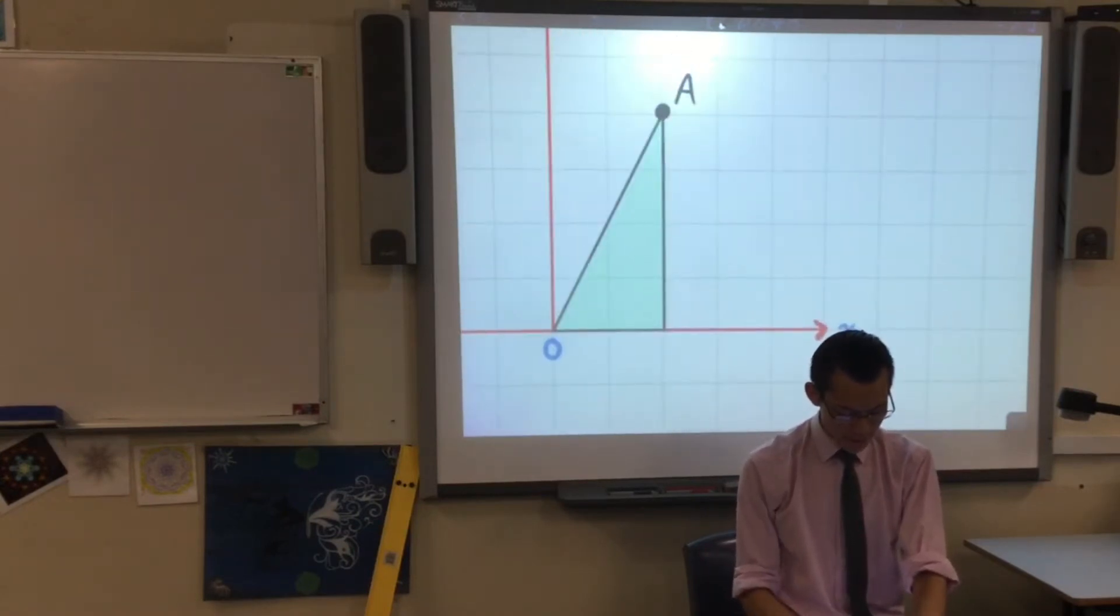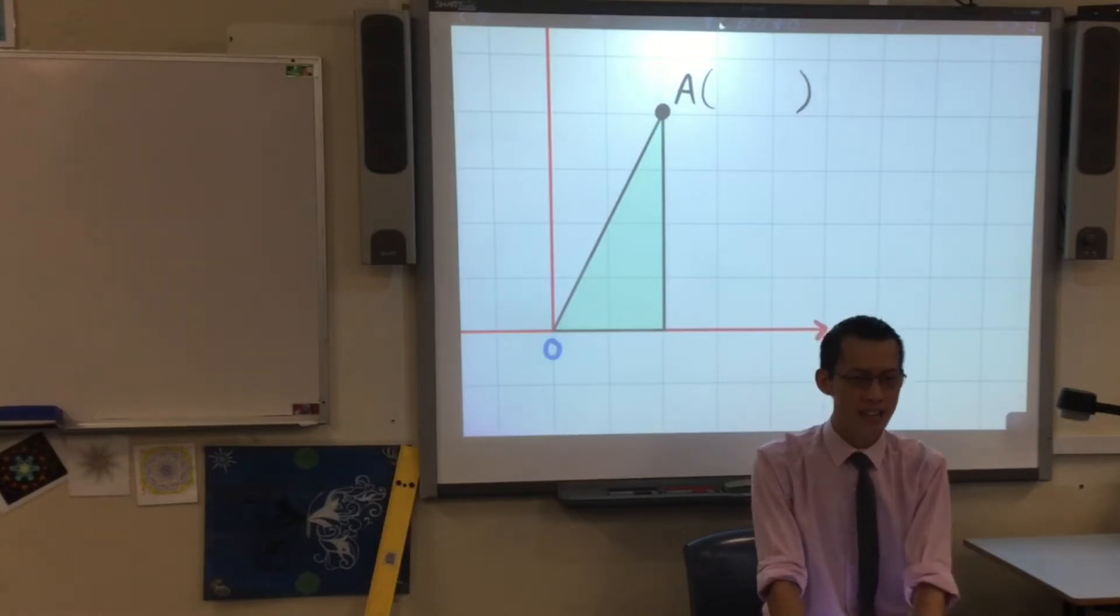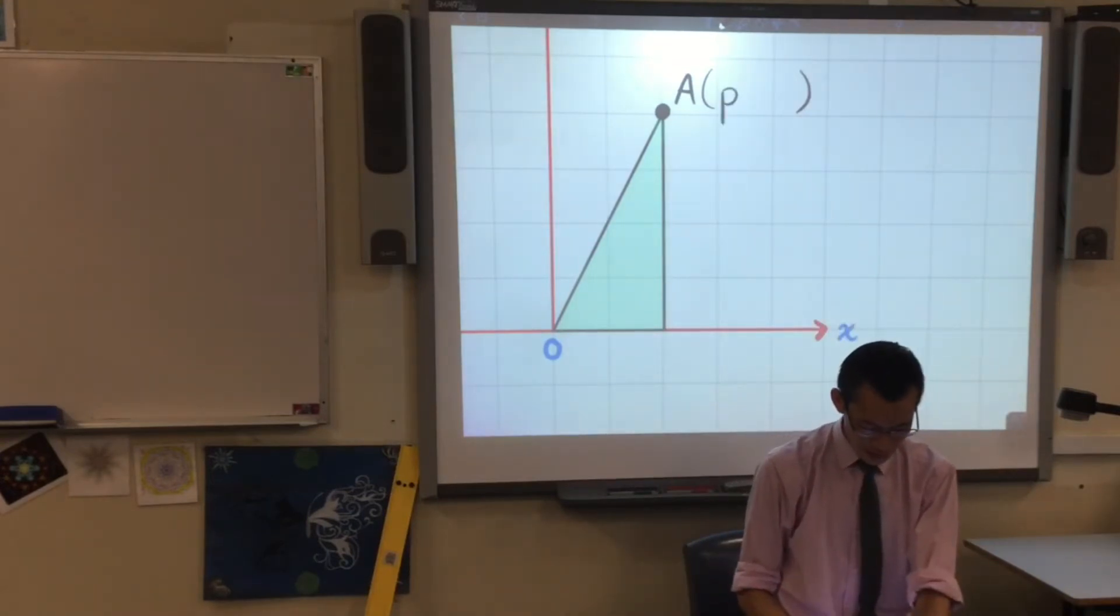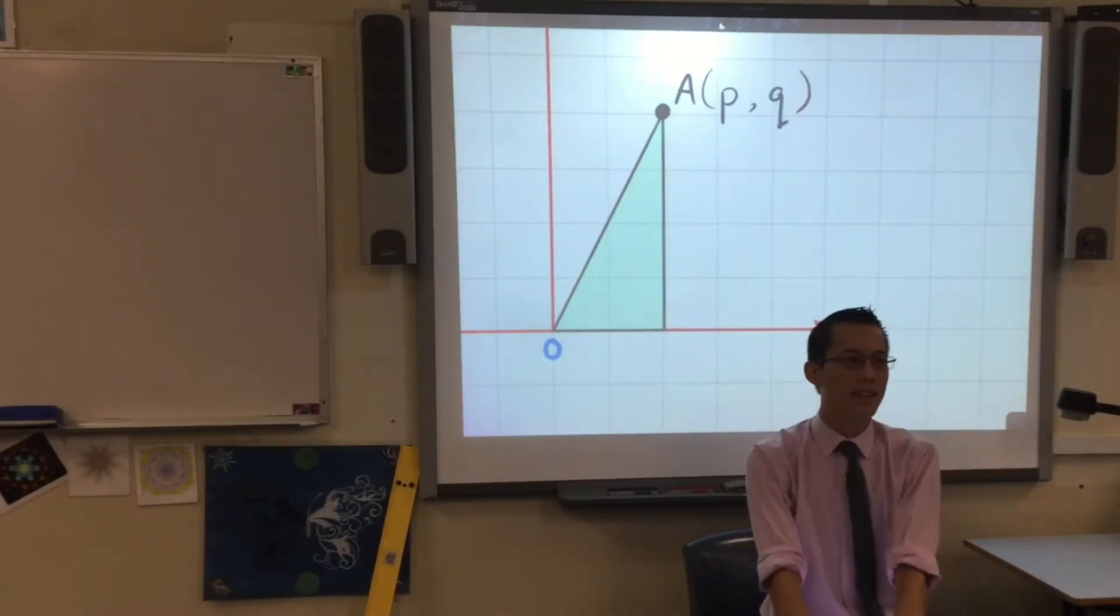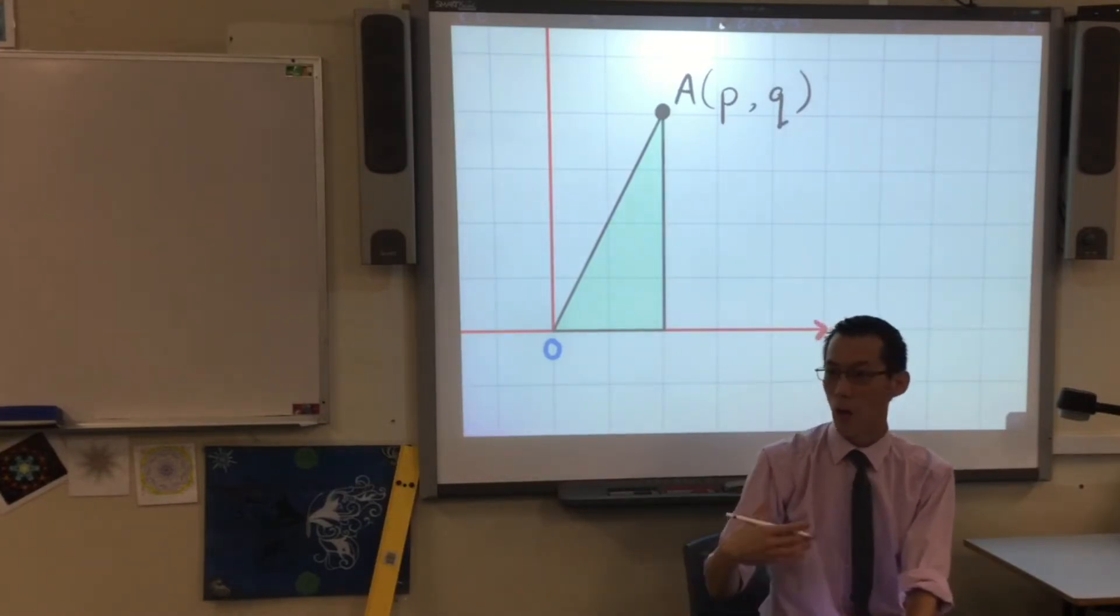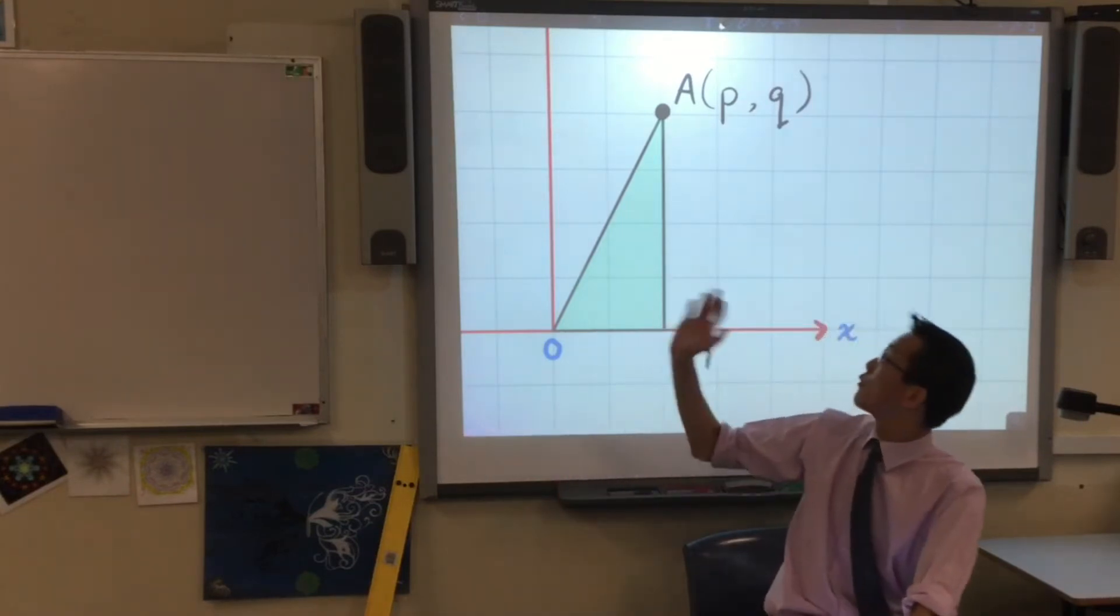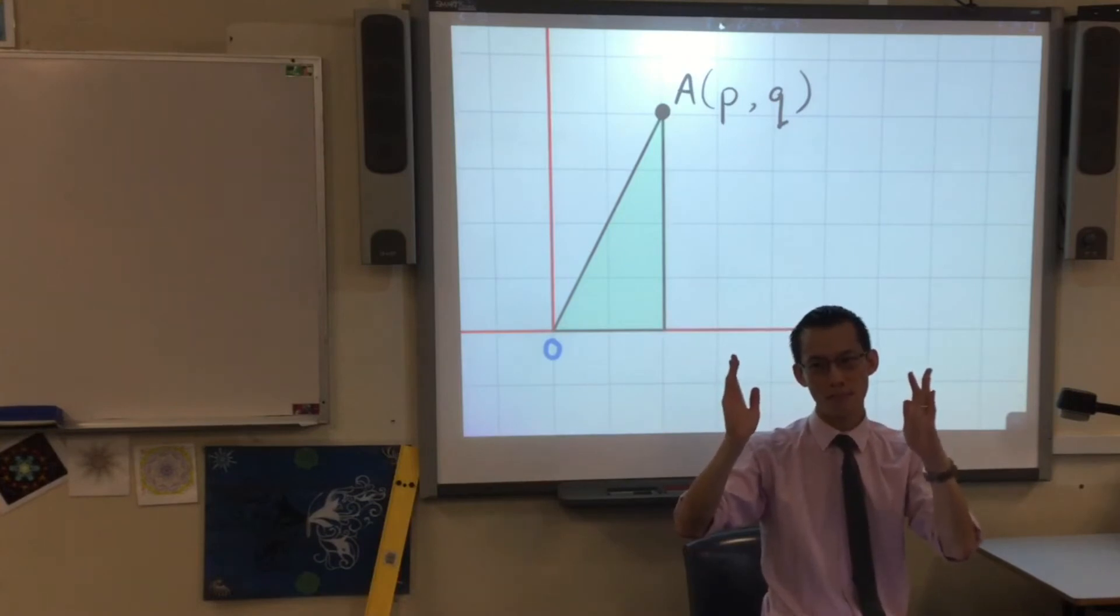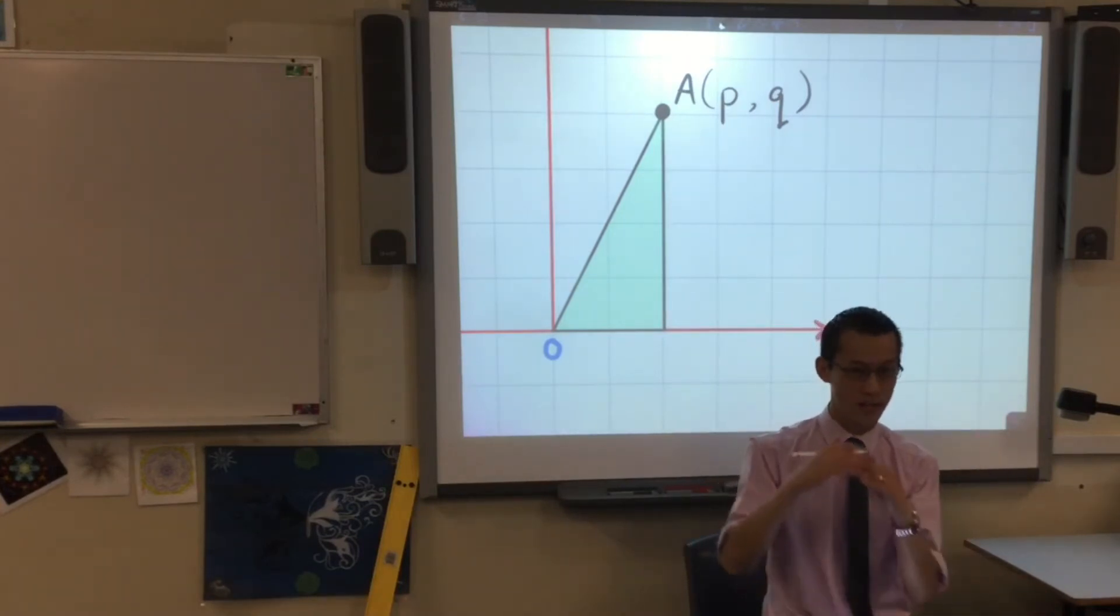Now, this point A, I'm trying to suggest that it's anywhere, it could be anywhere. So I can't say, even though it looks like it, that it's at 2,4, because that locks it in position at one particular spot. So instead of saying 2,4, I'm just going to say, well, let's use algebra, because algebra is the kind of mathematics that lets us deal with numbers when you don't know what they are. This will become really powerful for us in a minute. So I'm just going to call its x-coordinate P, and I'm going to call its y-coordinate Q.